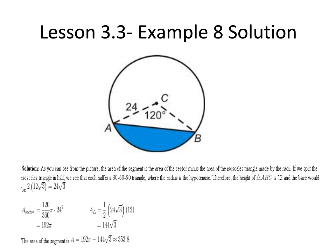A segment of a circle is the area of a circle that is bounded by a chord and the arc with the same endpoints as the chord.